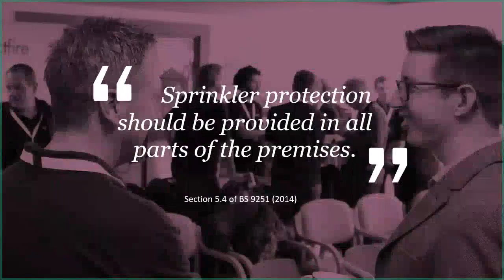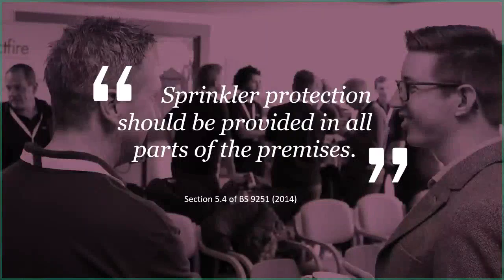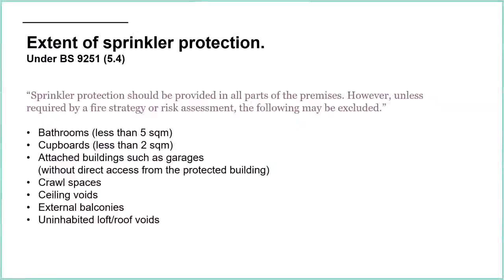There's a similar quote taken from BS 9251, the domestic and residential standard, where it says sprinkler protection should be provided in all parts of the premises. I'm sure there is a very similar statement in 16925 as well, which is the European standard for residential and domestic sprinklers. However, section 5.4 in 9251 talks about some exceptions - sprinkler protection should be provided in all parts of the premises, unless required by a fire strategy or risk assessment. The following areas may be excluded.